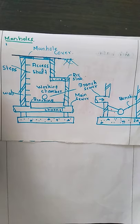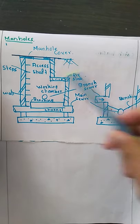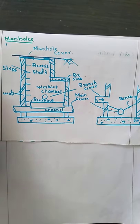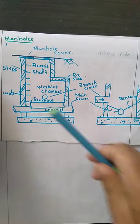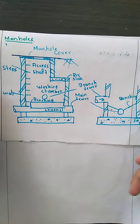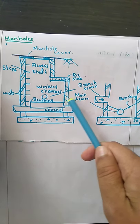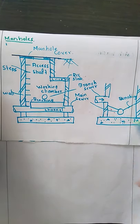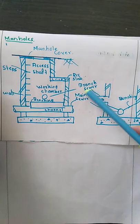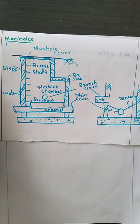The bottom or invert portion is also called the benching. It consists of a semicircular U-shape. This benching portion is provided so that wherever wastewater has to enter from the main sewer line into the branch sewer line, the slope provided in the benching directs the wastewater from the main sewer line into the branch sewer line.